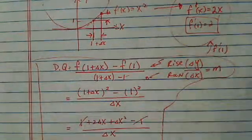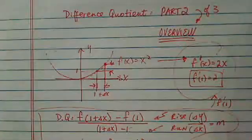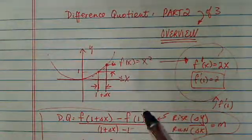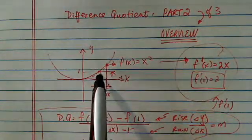So basically the overview for this one, for part 2 of the three-series part, difference quotient is a long, tedious way to calculate slope at a certain point.